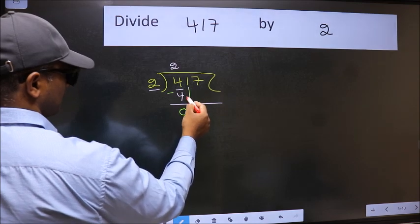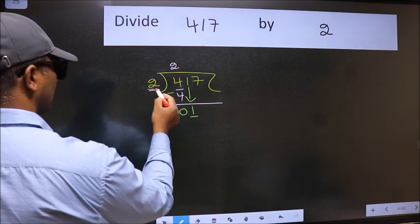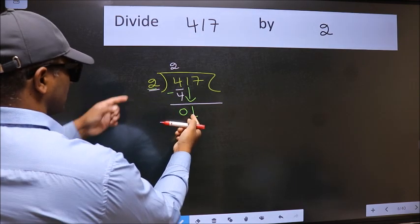After this, bring down the next number. So 1 down. Now here we have 1 and here 2. 1 is smaller than 2.